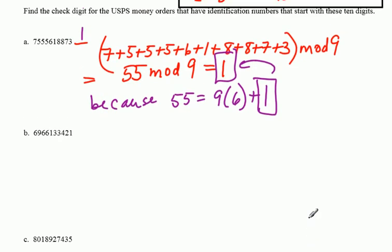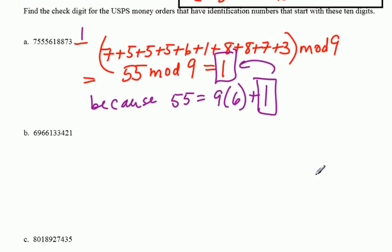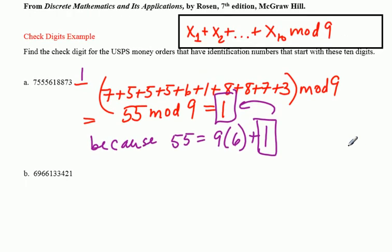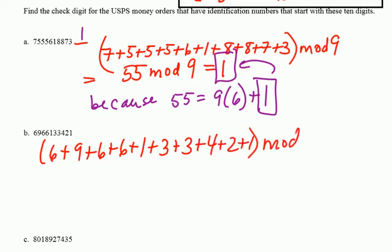All right, the next one is done the exact same way. So again, I'm going to use this general mod expression to add up all the ten digits. So again, I'm gonna say 6 plus 9 plus 6 plus 6 plus all these other numbers, whatever that sum is, I mod 9. If you work out that sum, it's 41. And if you think about it, 9 goes into 41 how many times? Well, it goes in 4 times, right? So I get 36, and I'm left with a remainder of 5.